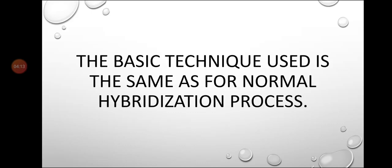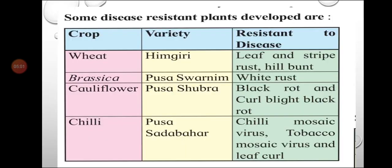The technique used for breeding disease resistant varieties is the same as the normal hybridization process — the same five steps of hybridization that we have already studied. After using the hybridization technique, several disease resistant plant varieties have been developed.